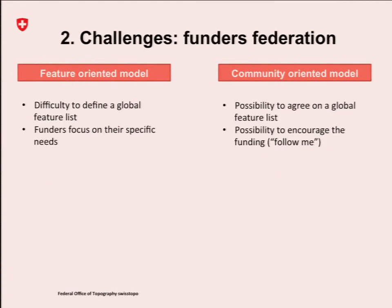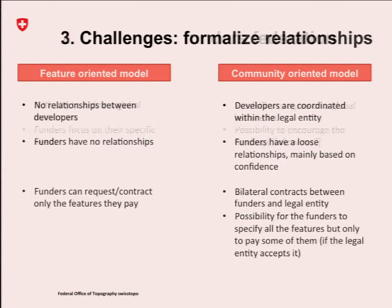On the founder federation side: in the feature-oriented model, it's very difficult to create a global feature list, because every founder wants their own feature and doesn't care about others — founders focus on their specific needs. In a community-oriented model, you have the possibility to agree on a global feature list and encourage funding from other founders. In the case of OpenLayers, it was quite straightforward: we said we want feature parity with OpenLayers 2, and in addition it has to be WebGL compatible. So this feature list was fairly easy to define.